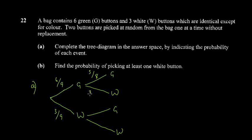After picking a white one first, all six green buttons are still there, so the probability of green next is 6 over 8. Since we picked a white one before, only 2 white buttons remain, so the probability of white next is 2 over 8. Each pair of branches adds to 1.